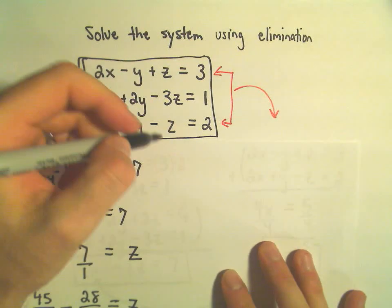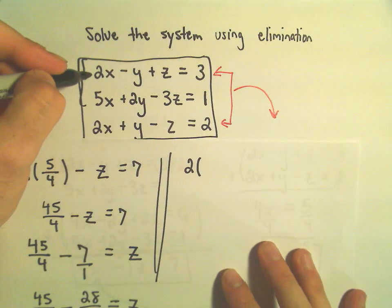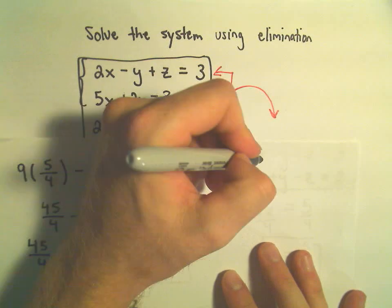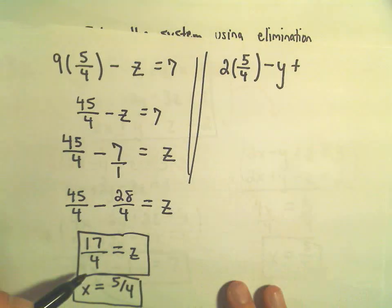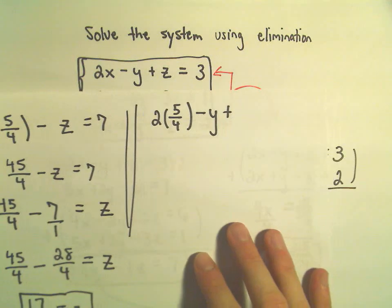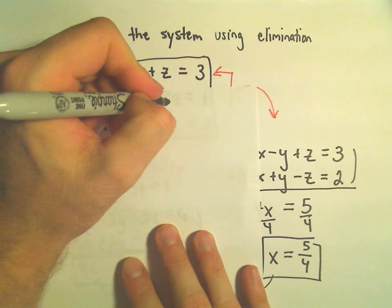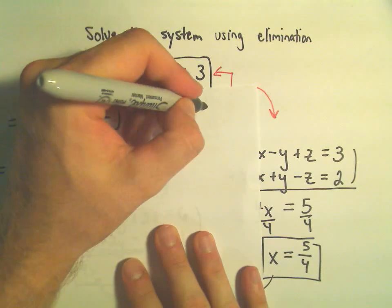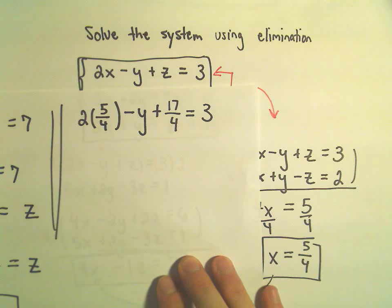I'll plug in my z value. And then I'll be able to solve for y. So I don't know. I'm just going to use the first one here at random. It doesn't matter which one you use. So we have 2 times x, which we said was 5 over 4 minus y plus z. And we figured out just a second ago that z was 17 over 4. So 2 times 5 fourths minus y plus z, which is 17 over 4. That's going to equal positive 3. And now I just have to do the arithmetic and figure out what value y is.